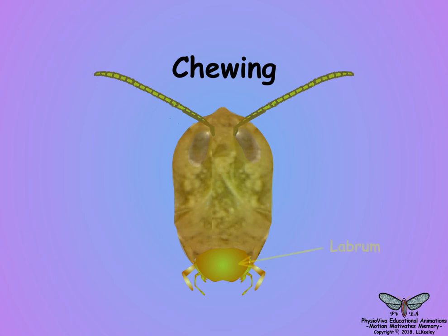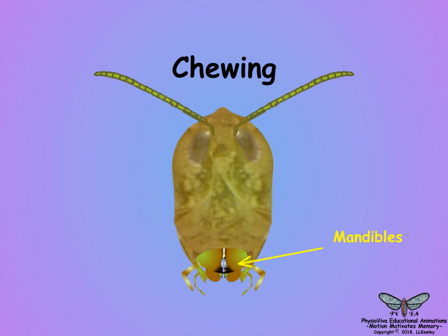The broad flap-like labrum is the outermost structure and acts as a flexible upper lip covering the mouth. Below the labrum, paired mandibles are highly sclerotized, unsegmented jaws that cut solid food and crush it, similar to vertebrate teeth.